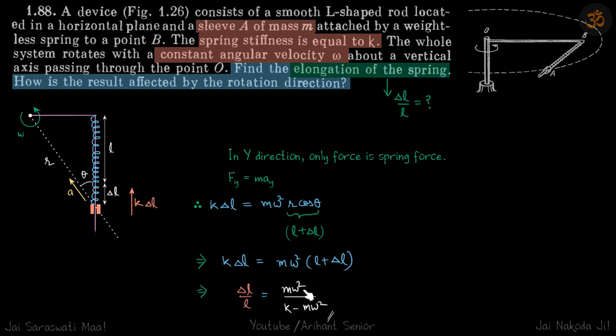Now is the result affected by the circular direction of rotation? It won't, because you can imagine that the circular radius this sleeve is traveling still remains the same, omega also remains the same, so its acceleration directed towards center also remains the same, which means its component in the y direction also does not change. So nothing in this equation changes if you just reverse the direction of omega. The acceleration is same and the extension is also same, so your result is also going to be same.